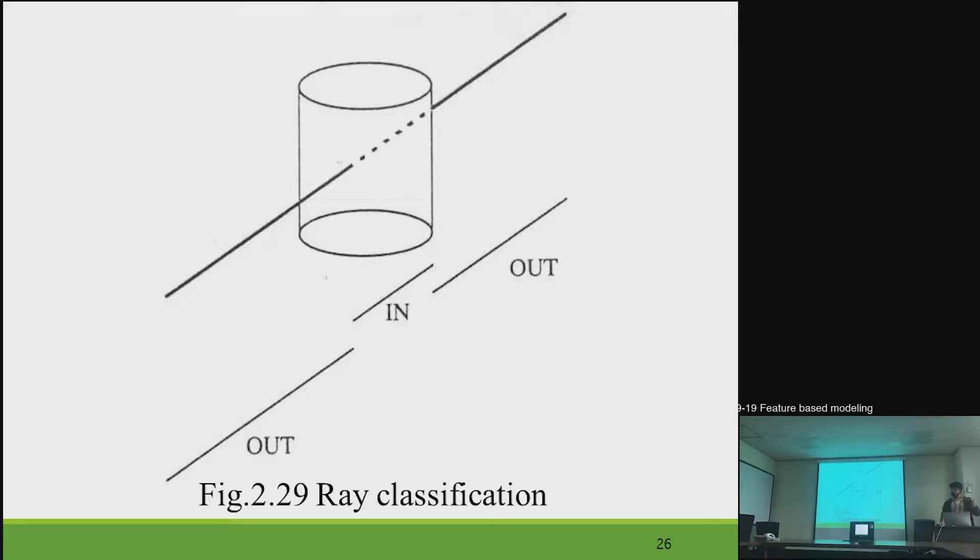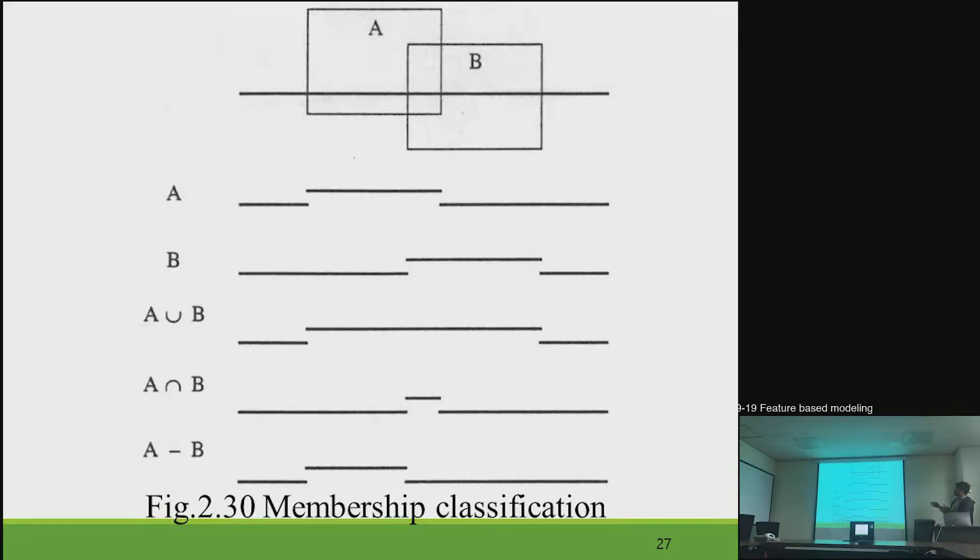But it is a special case. In general, rays may work like this. So the result of the classification consists of sequence of ray segments by sorting the ray segments with respect to ray parameters. The combination step is reduced to merging the sequences with boolean operators. And those are the boolean operators which you have seen.